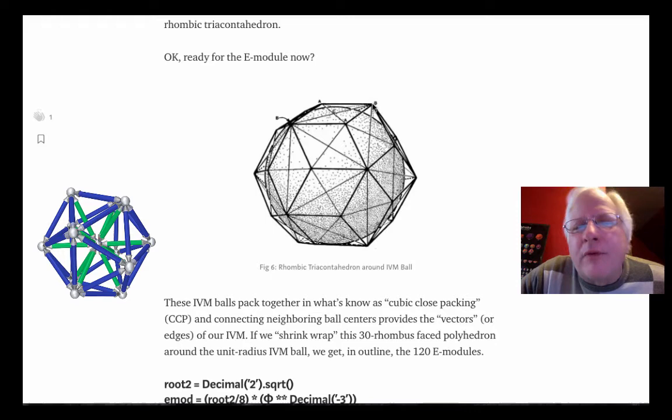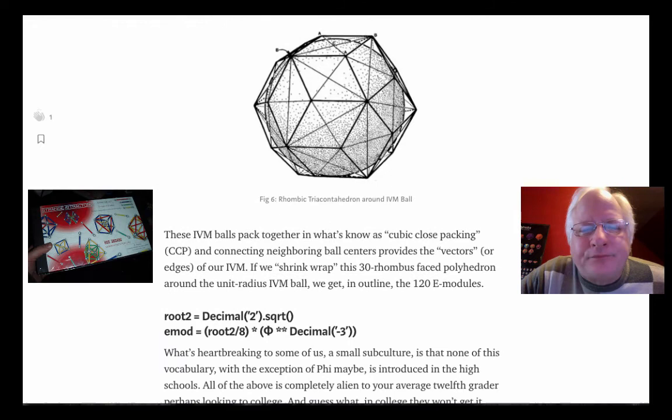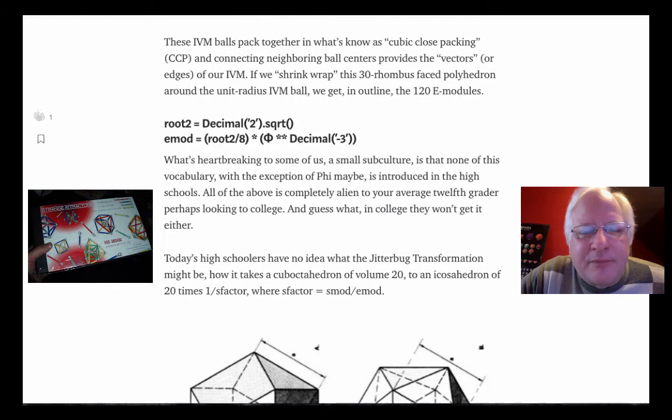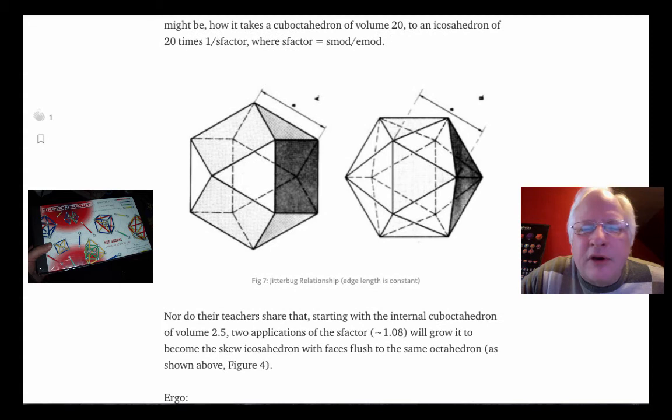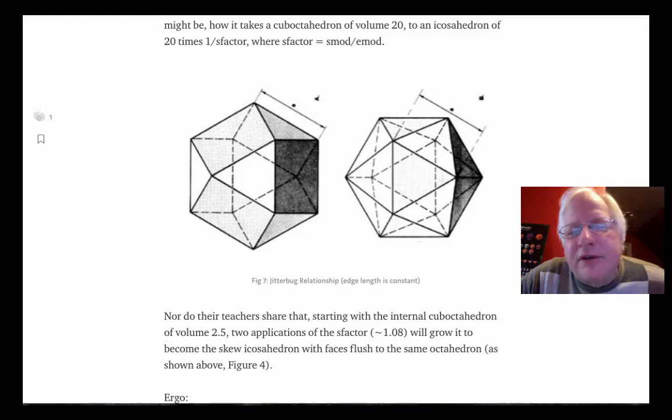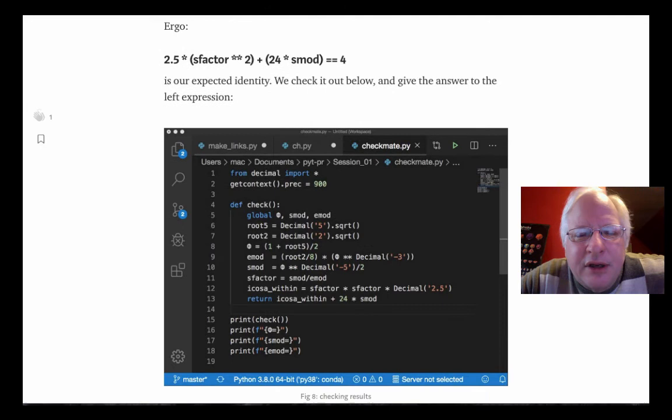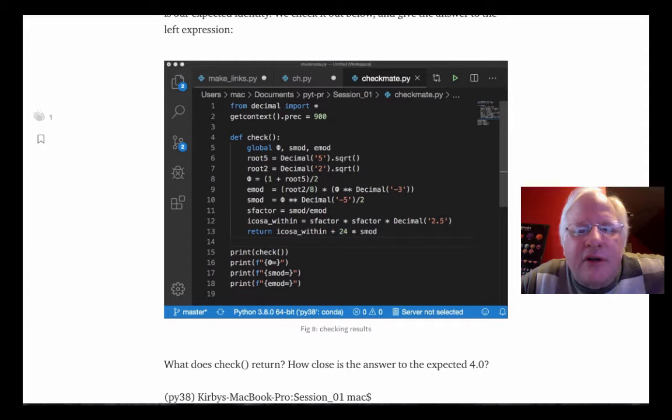The E modules are 1/120th of this diamond faceted 30 faced polyhedron. And that's one of our CCP balls there, you know, that packs to form the IVM. I'm not going as slowly through those concepts in this channel as I do in the essay because these people are just coming up to speed coming from Python. Whereas, I'm presuming some of you are already well versed in this material and you've heard my channel videos in other contexts. And so, you already know about the jitterbug and you've already read Synergetics. You already know the Bucky stuff. That's not what you're here to learn. You're going the other way across the bridge.